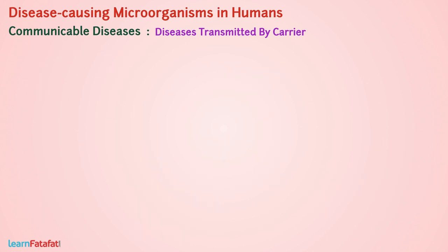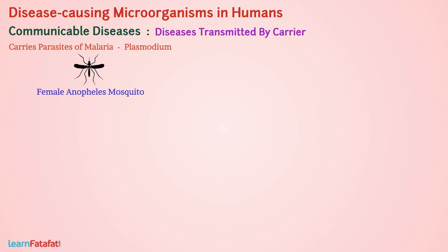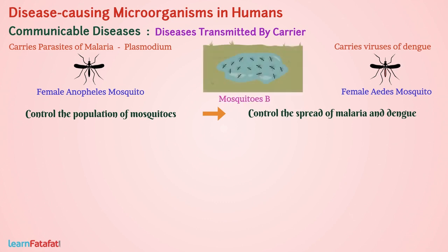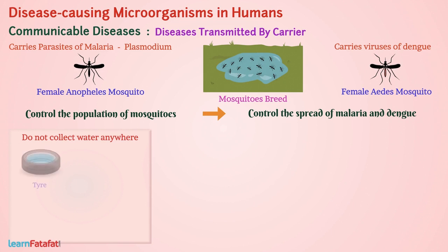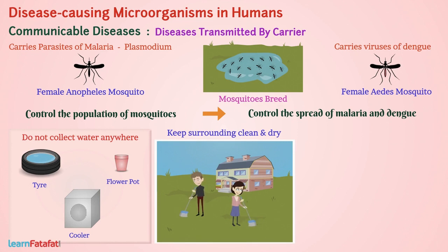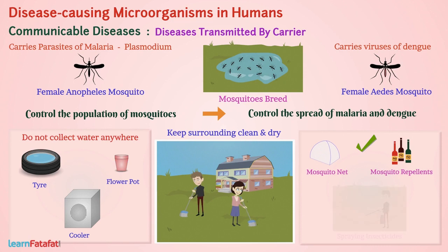Similar to the housefly, the female Anopheles mosquito carries the parasite of malaria called Plasmodium, and also carries viruses of dengue. If we control the population of mosquitoes, we can control the spread of malaria and dengue. Basically, all mosquitoes breed in water, so we should not let water collect anywhere — in tires, flower pots, coolers, etc. We should keep our surroundings clean and dry. Use of mosquito nets, mosquito repellents, and spraying insecticides also help to control malaria and dengue.